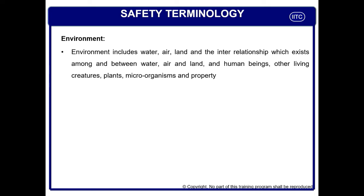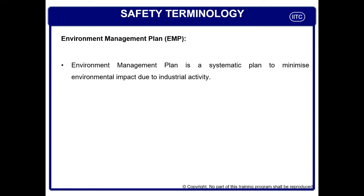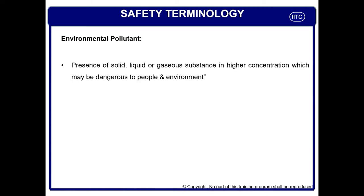If you are going for a position in HSE or fire, people may ask you for the definition of environment. You can read and absorb this paragraph to define it. The Environment Management Plan (EMP) is a systematic plan to minimize environmental impact due to industrial activity. Environmental pollutants are the presence of solid, liquid, and gaseous substances in higher concentrations which can create dangerous situations for people and the environment — including solid, liquid, and gas pollutants.